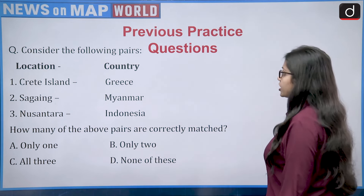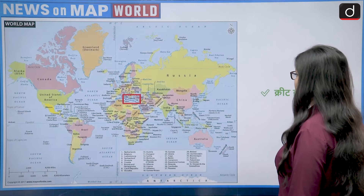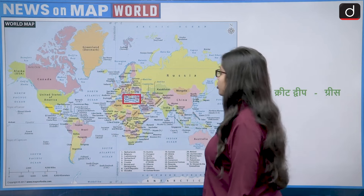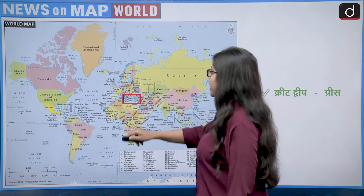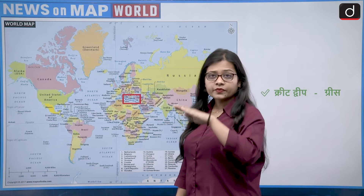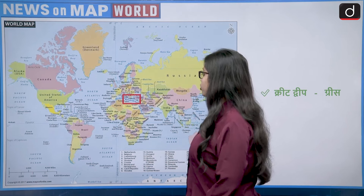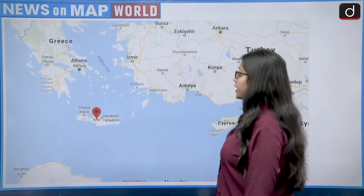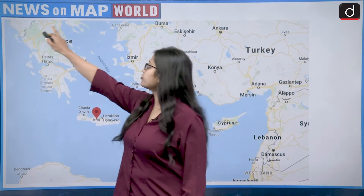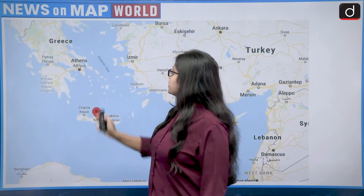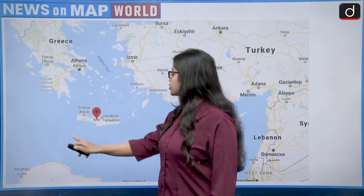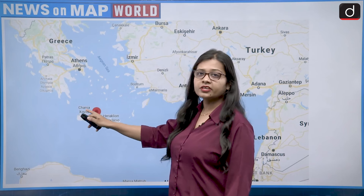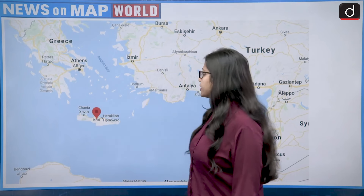Let's discuss the first pair: Crete Island and Greece. Greece is a country which lies in Europe, to the south of Europe, and it shares its southern border with the Mediterranean Sea. The Crete Island lies in the Mediterranean Sea and it is governed by Greece, so the first pair is correct.